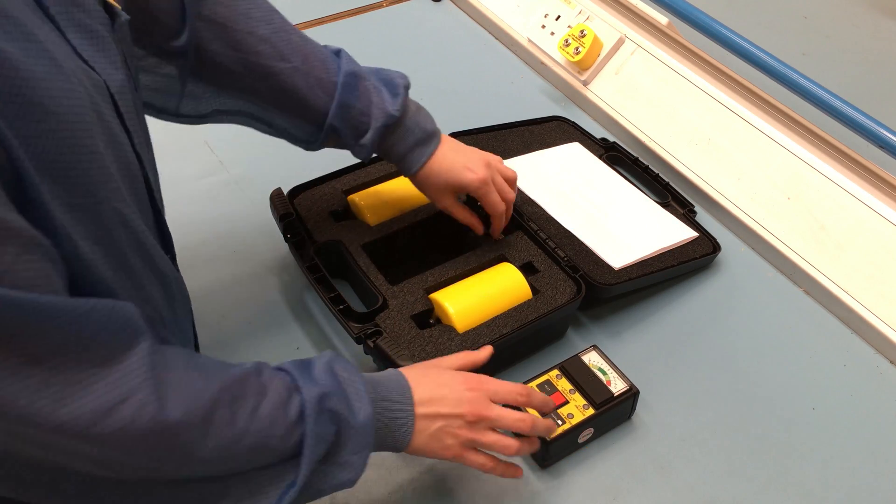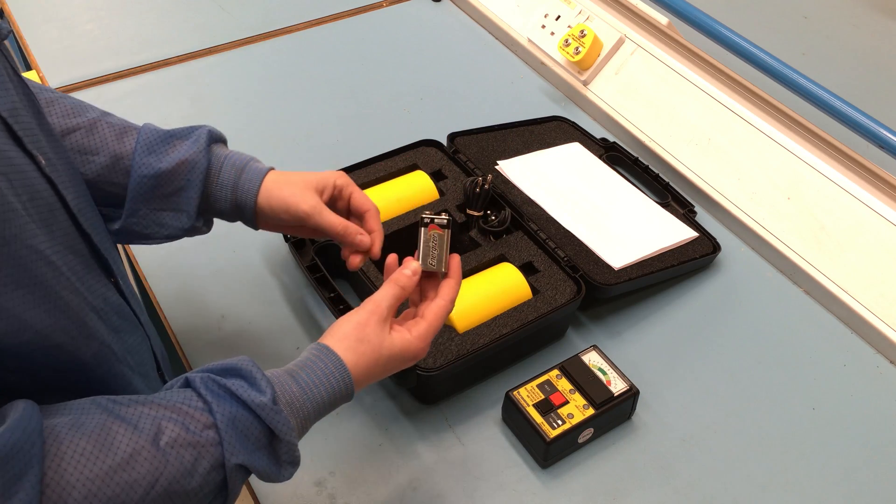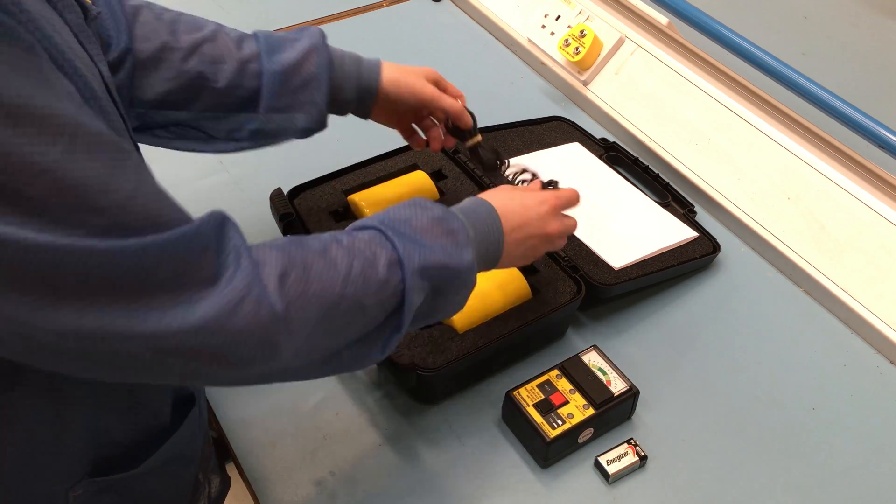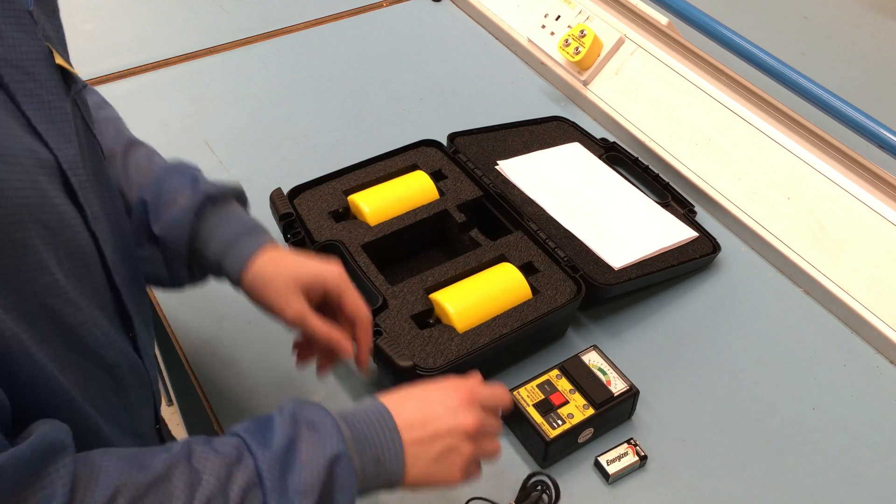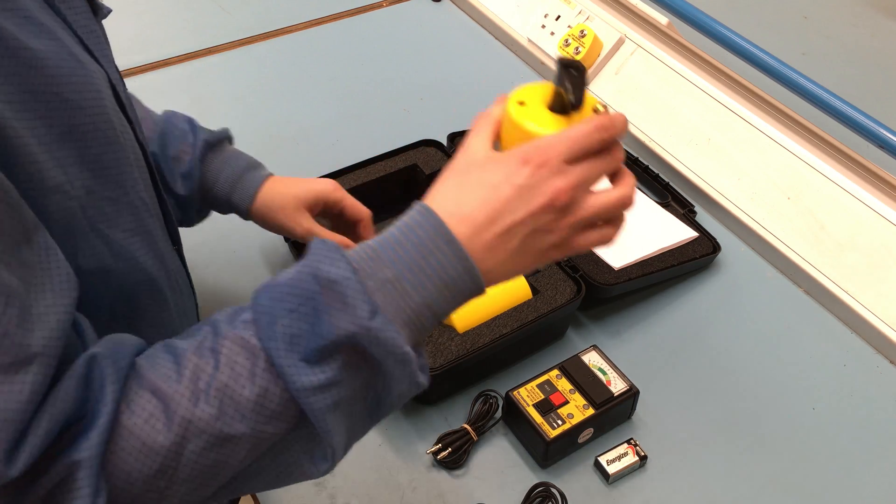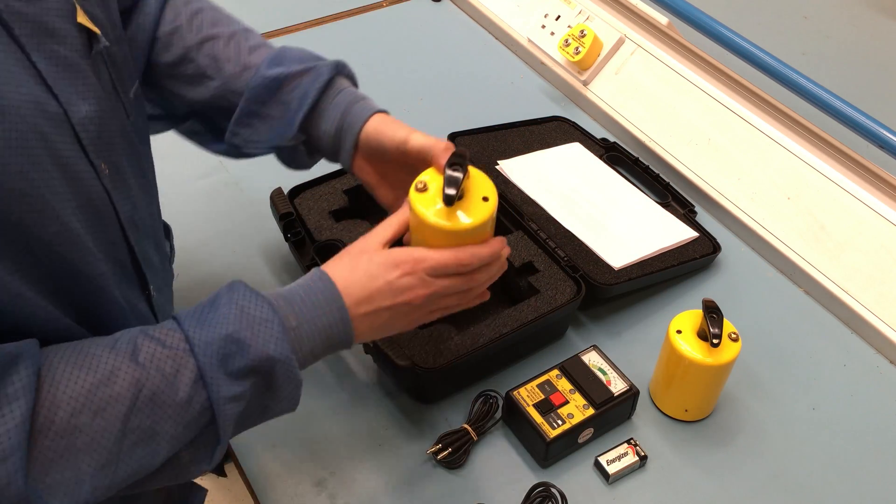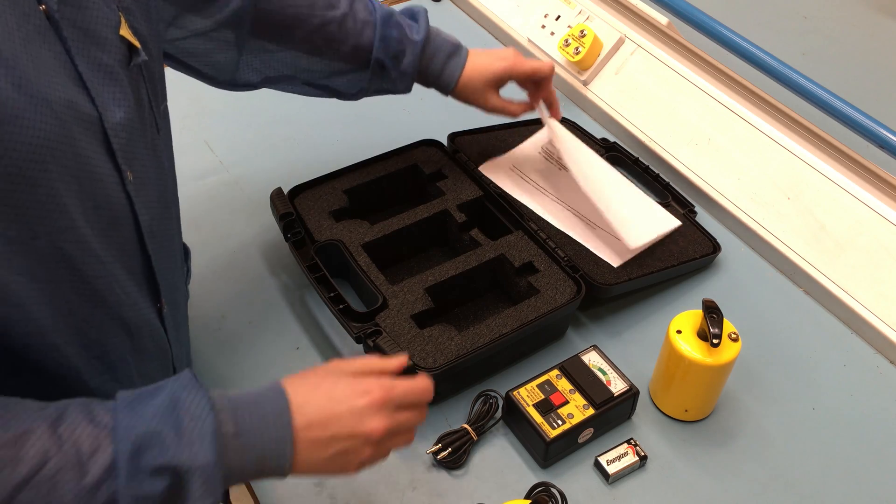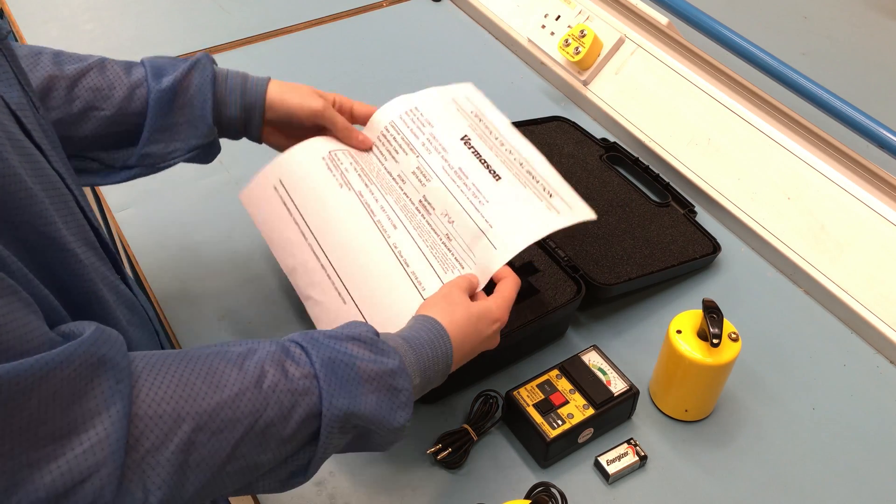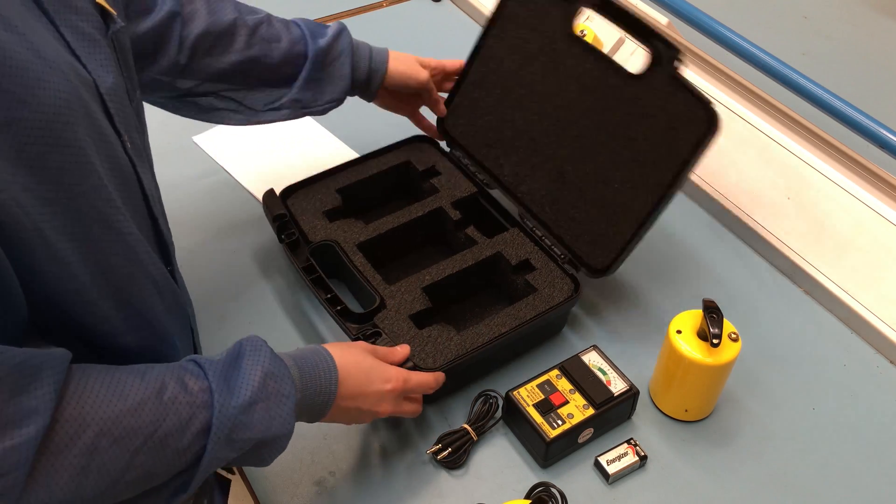The kit includes the meter itself, a 9-volt alkaline battery, a set of two shielded test leads, two 2.27kg electrodes, the certificate of calibration, and the carry case.